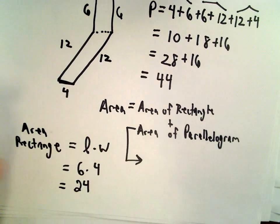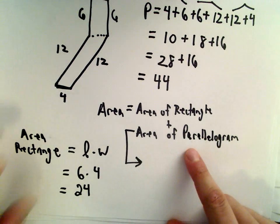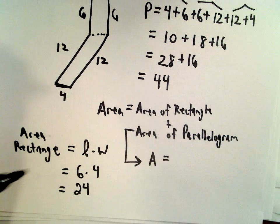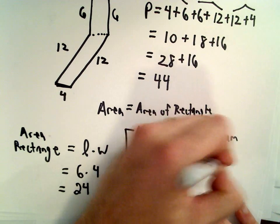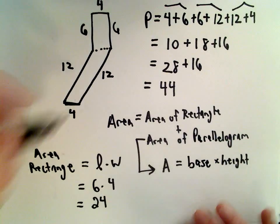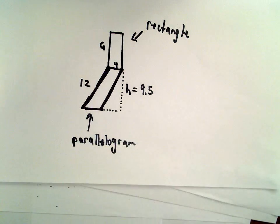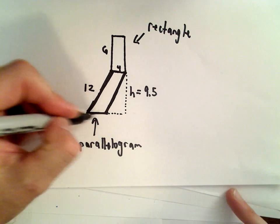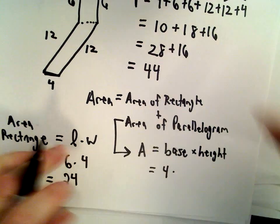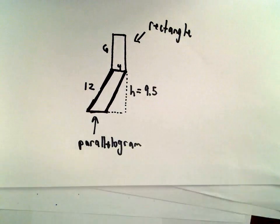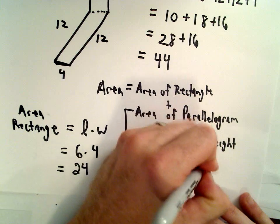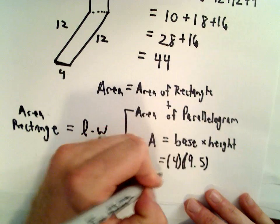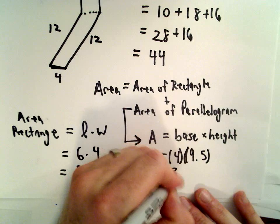To get the area of the parallelogram, recall that the area of a parallelogram, that's going to be equal to the base times the height. Well, we had in the original picture, they actually gave us the height. So the base of this is going to have a length of 4 units. And we said that the height of this parallelogram, that was given to us as 9.5. So let's see, 4 multiplied by 9.5, that's going to give us 38.